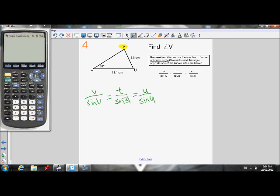I know side V, side V is 11.1. So I'll get rid of side V there. Side V is 11.1. And I know side T. Side T is 5.8.